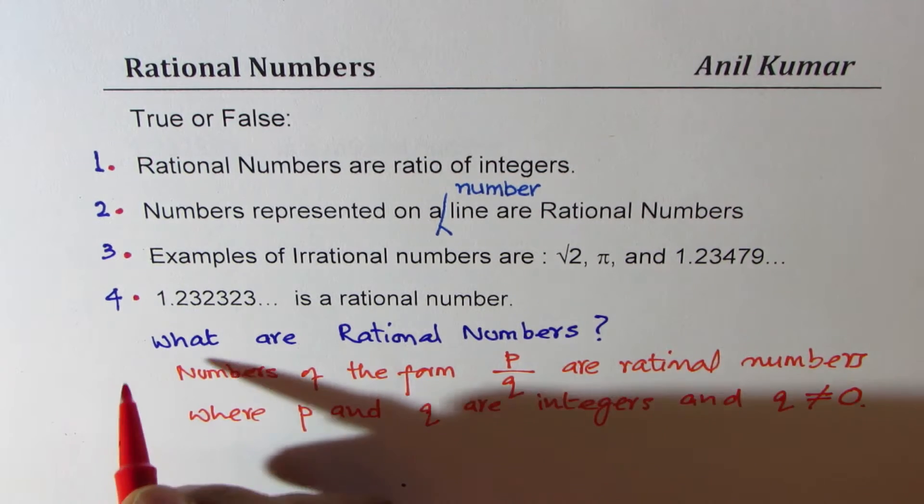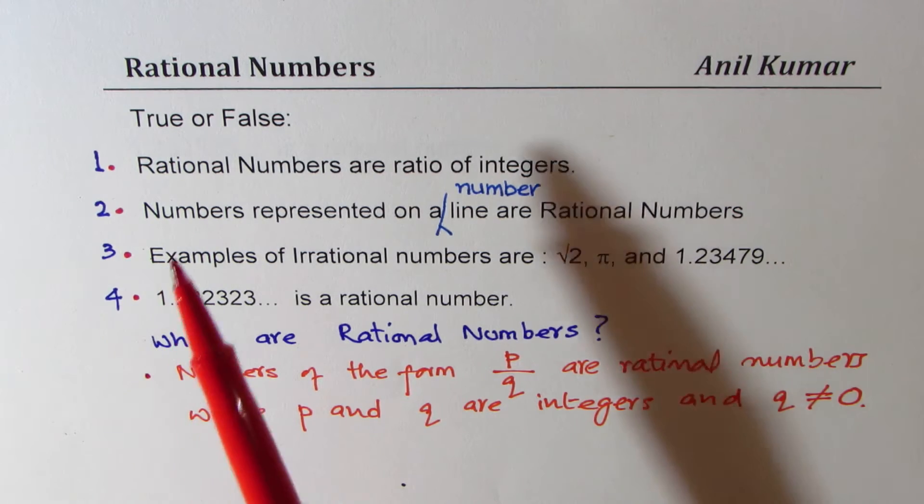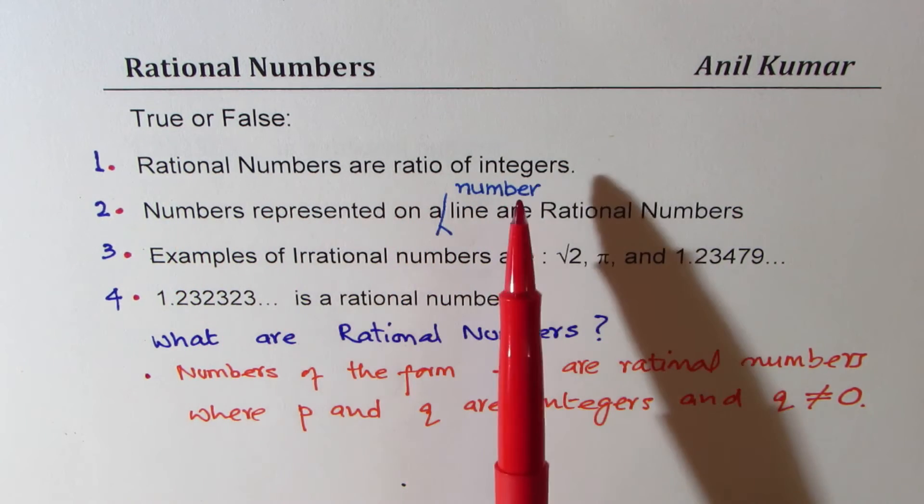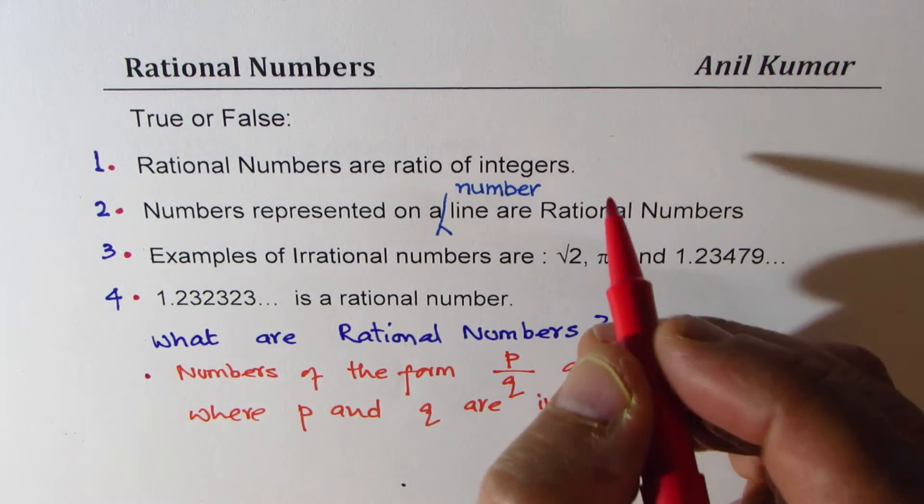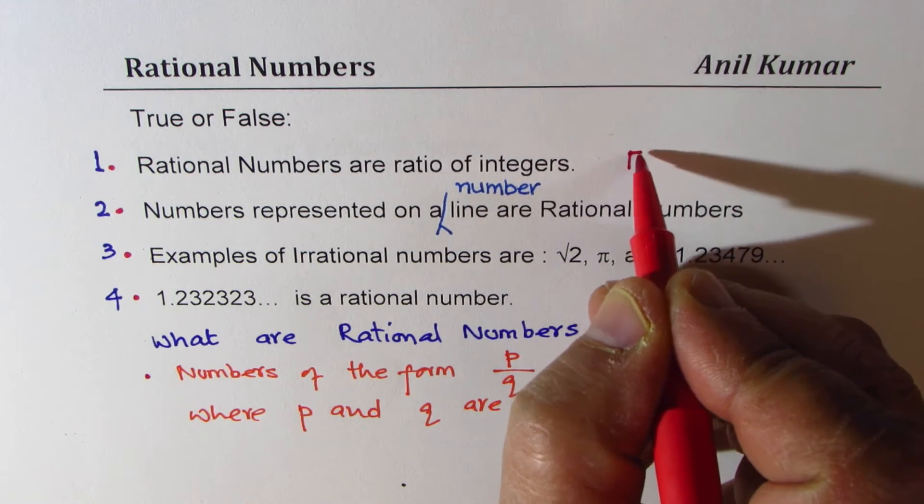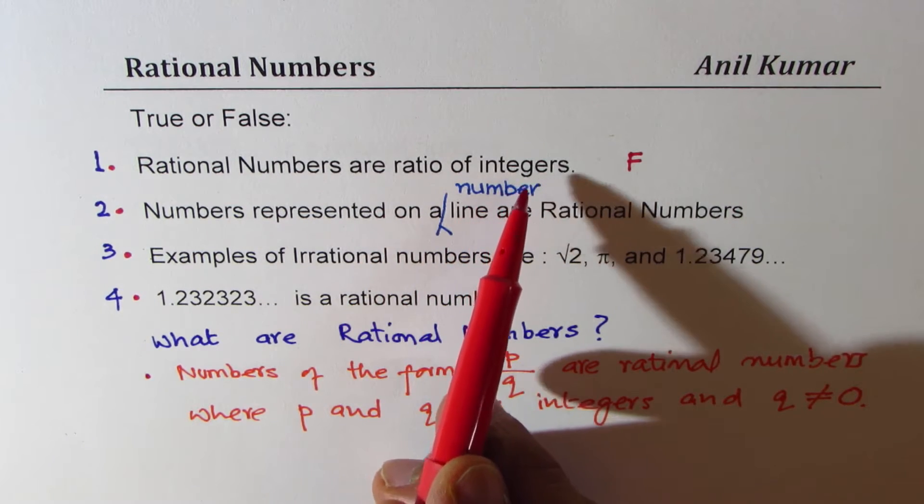Now once you know this, let's go back to our questions and answer them again. You can check your answers with that. Now rational numbers are ratio of integers. Is this true or false? Well, if you have written it as false, then it is correct.